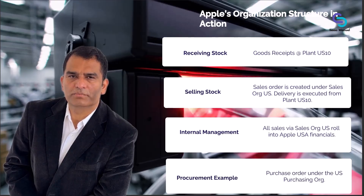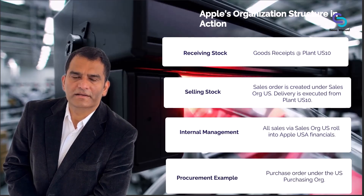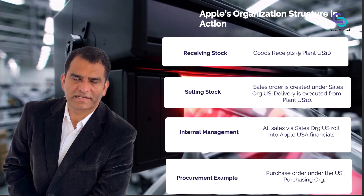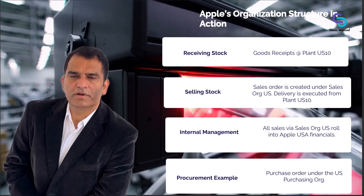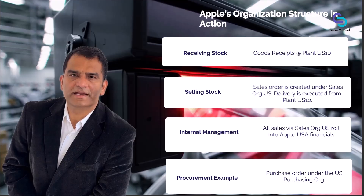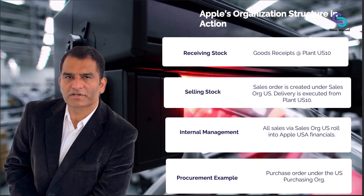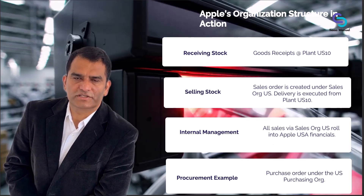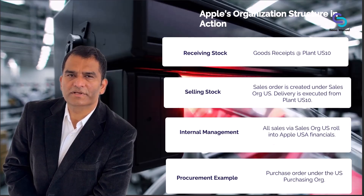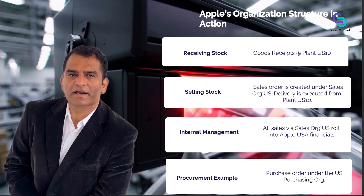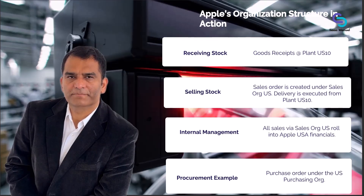Let's look at a procurement example. Apple USA needs to procure new office equipment for the Cupertino campus. The purchasing team creates a purchase order under the U.S. purchasing org assigned to US01, and it is delivered to plant US10 — or another plant like a facility plant.